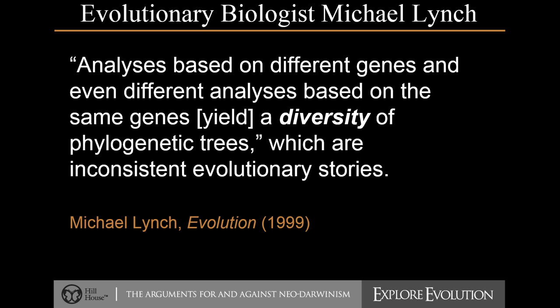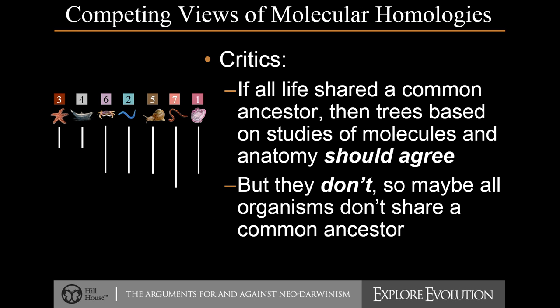Here's a quote from an evolution textbook that acknowledges that analyses based on different genes — and even different analyses based on the same genes, meaning sent to different labs with slightly different methods — produce a diversity of trees. So the trees don't match, which gives a very different picture of ancestry depending on each result. The argument says: if all life shared a common ancestor, shouldn't the trees agree? Shouldn't studies based on molecules and studies based on anatomy produce similar results if they truly reflect a common ancestor? Since those trees don't match, maybe these shared structures or shared DNA sequences really aren't truly the result of common ancestry.